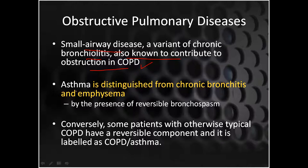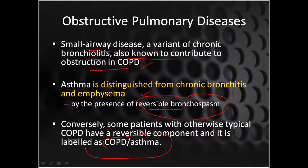Asthma is different from chronic bronchitis and emphysema because in asthma there is reversible bronchospasm. Whenever there is smoke or an irritant, bronchioles go into spasm, but this is transient — once the irritant is removed, bronchia and bronchioles return to normal, producing the whistling sound. These are distinguished from COPD because of the reversible bronchospasm. However, some COPD patients also have a reversible component and are termed COPD/asthmatic patients due to overlapping features.